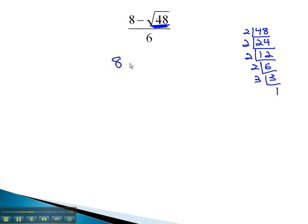We end up with 8 minus the square root of 2 to the 4th times 3, all over 6. We can divide the exponent on the 2 to the 4th by the index of 2 to find out how many of this number come out. 4 divided by 2 is 2, so we pull out 2 squared.